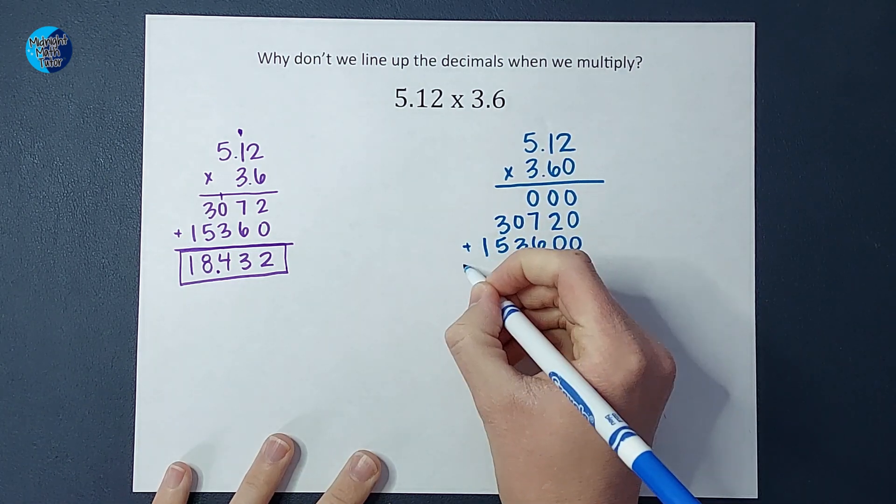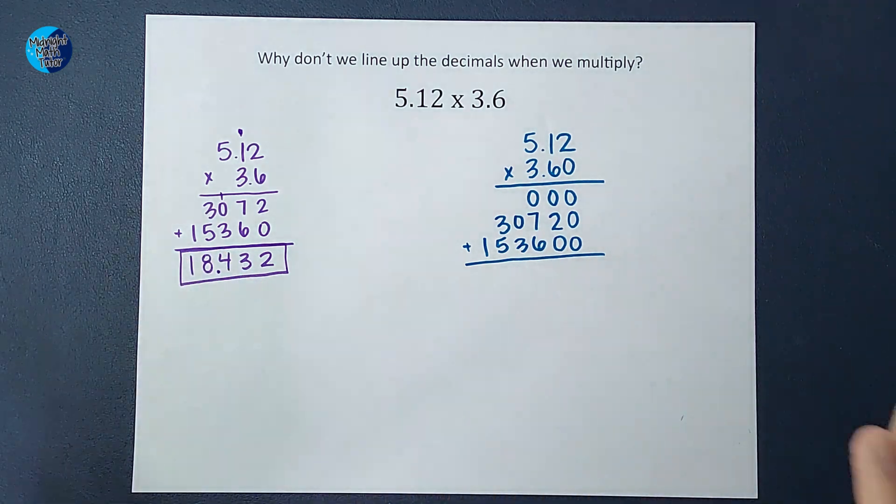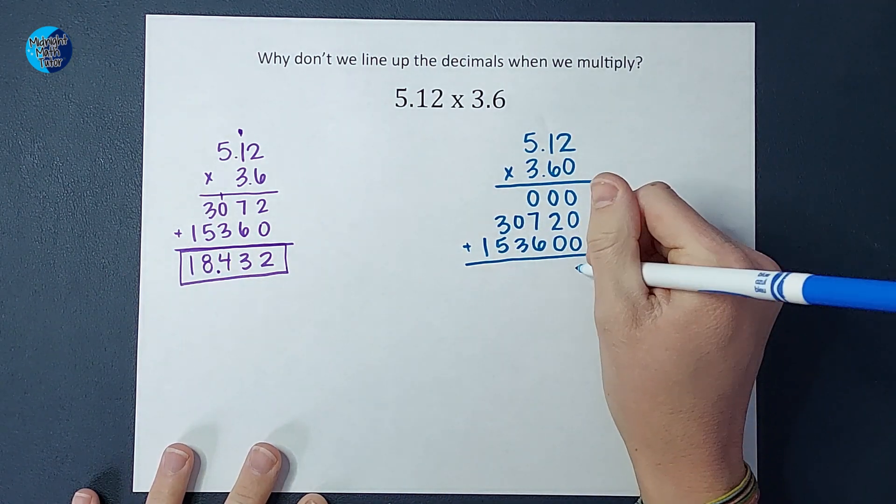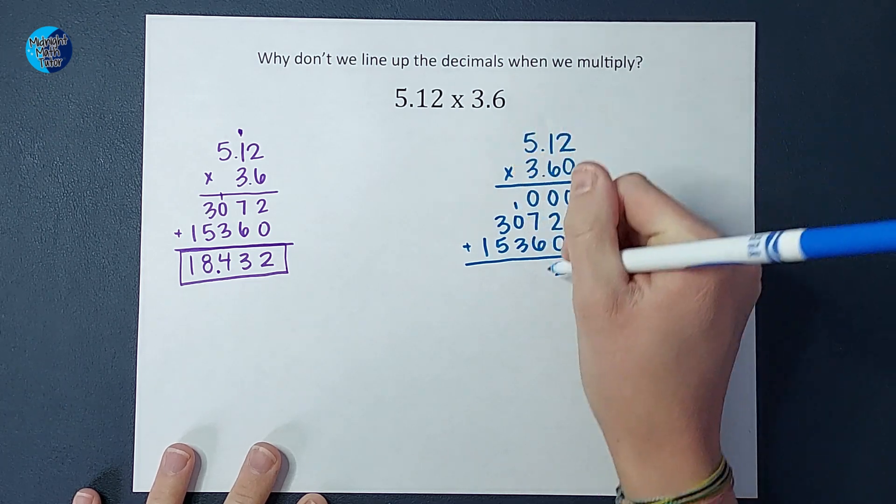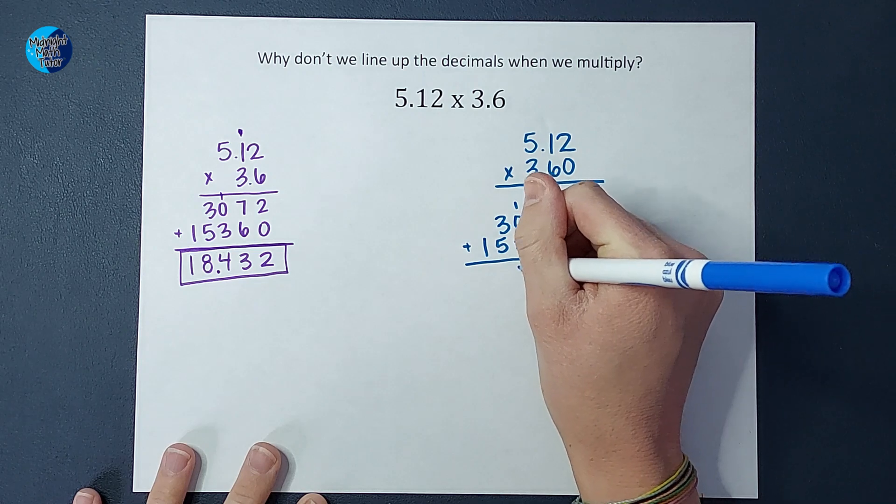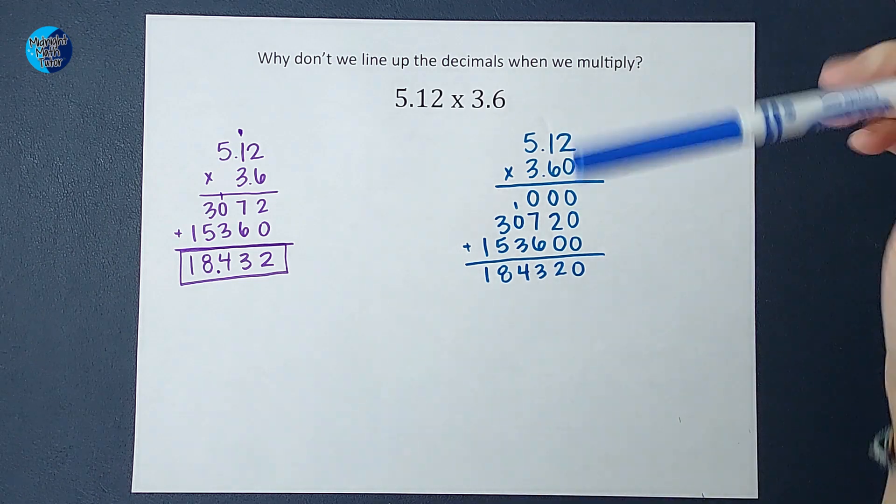Now I'm going to add these all up. And you might be noticing that these look very similar. They're not exactly the same, right? But they look very similar. So I have zero, two, 13, four, eight, and one. And then to figure out where the decimal goes,